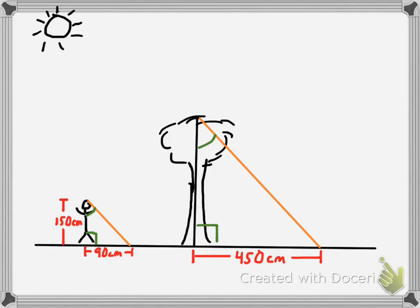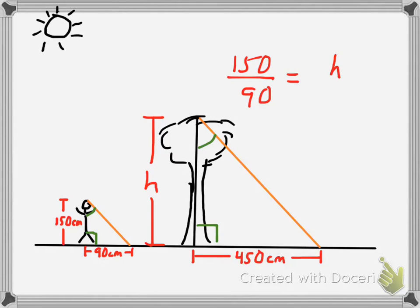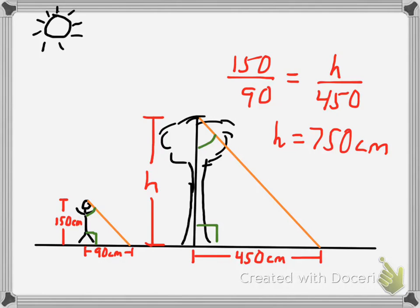Since we know these two triangles are similar, it's easy to use a proportion to find the height of the tree. You set up the proportion: the height of the person is to the length of their shadow as the height of the tree is to the length of its shadow. Cross-multiplying gives you the height of the tree, which turns out to be 750 centimeters.